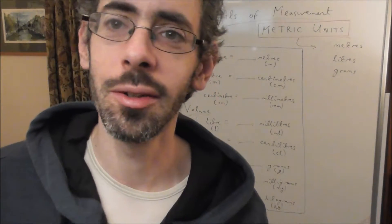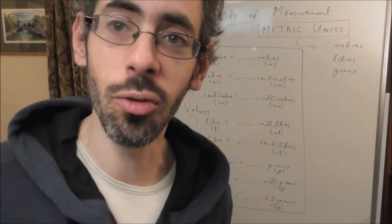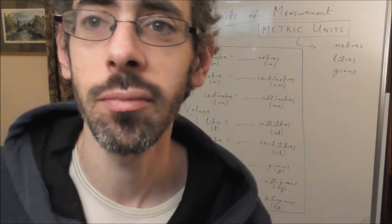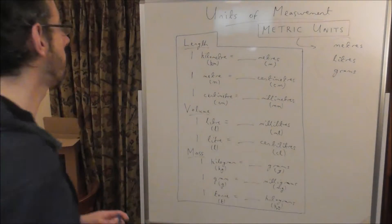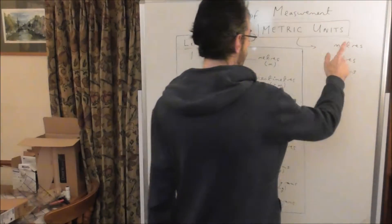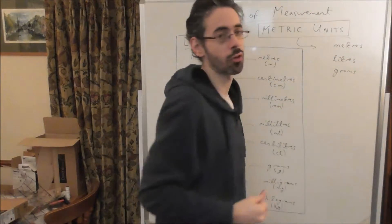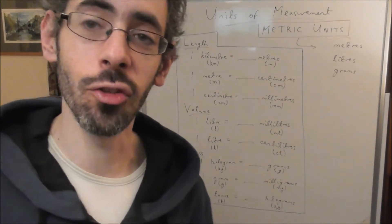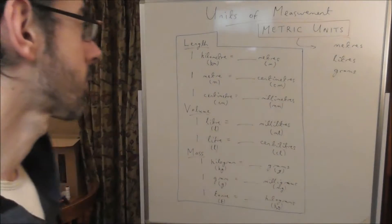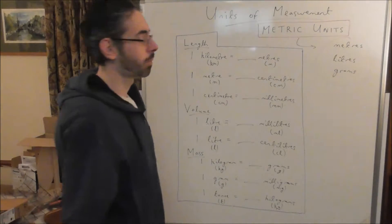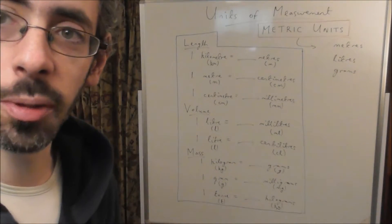For example, going from centimetres to metres, or going from kilograms to grams. To do that you need to be good at multiplying and dividing by ten, a hundred and a thousand. So we're going to be doing units of measurement today, specifically metric units. Metric units are to do with metres, litres and grams — metres for length, litres for volume and grams for mass. Metric units are easy to work with because they're all to do with tens, hundreds and thousands. What I thought we'd do first is fill in this table, which will help us when we do conversions a bit later on.